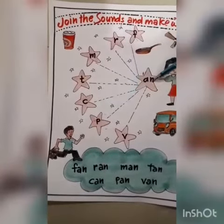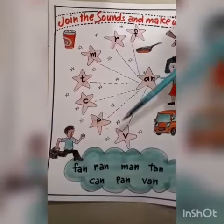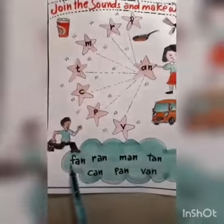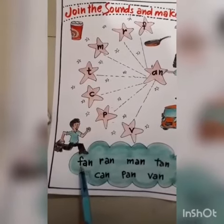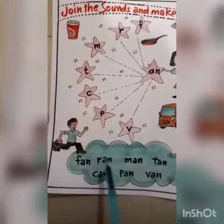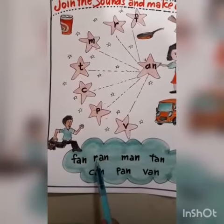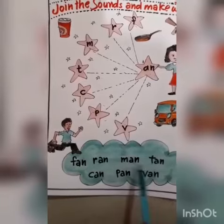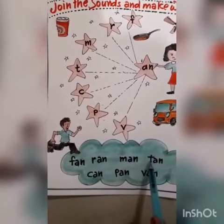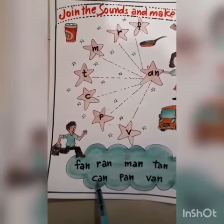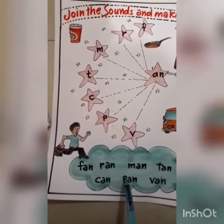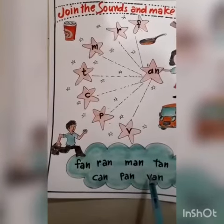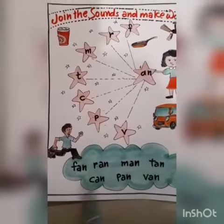P sounds P and 'a' — pan. V sounds V and 'a' — van. Repeat after me: F and fan, R and ran, M and man, T and tan, K and can, P and pan, V and van.